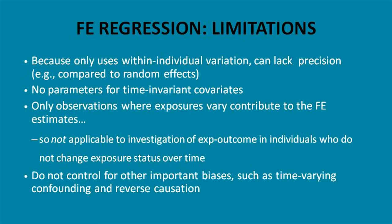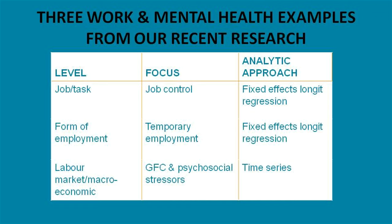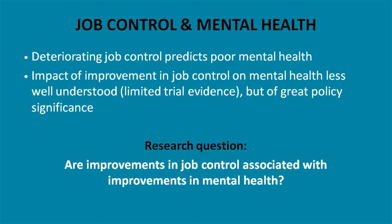We had three examples but will skip one. We'll look at the job task level — job control and mental health — and then we'll look at an analysis around temporary or precarious employment. Most of the evidence around job control and mental health tells us that poor job control or deteriorating job control is harmful to mental health. But what we really want to know is: if we improve job control, will we improve mental health? That's the intervention question, the policy-to-practice question. So that's how we framed our research question.